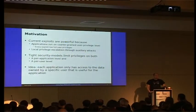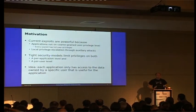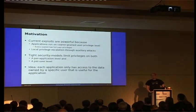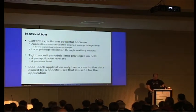What we would like is a tight security model that limits privileges on both a per-application level and a per-user level, so that we have different security privileges for each application and each user. This limits what an application can access and what data it can modify. For example, a web browser should be limited to internet access and its local cache, but should not have access to the user's data files unless the user explicitly wants to use them.